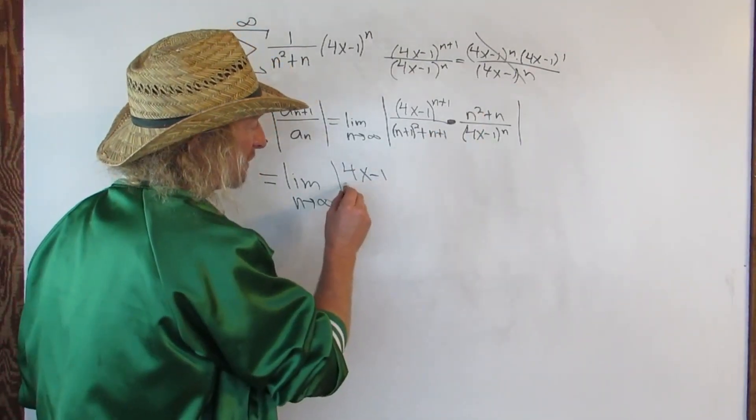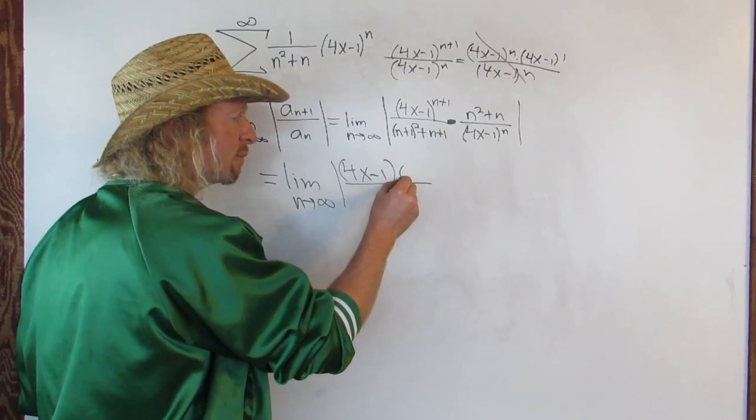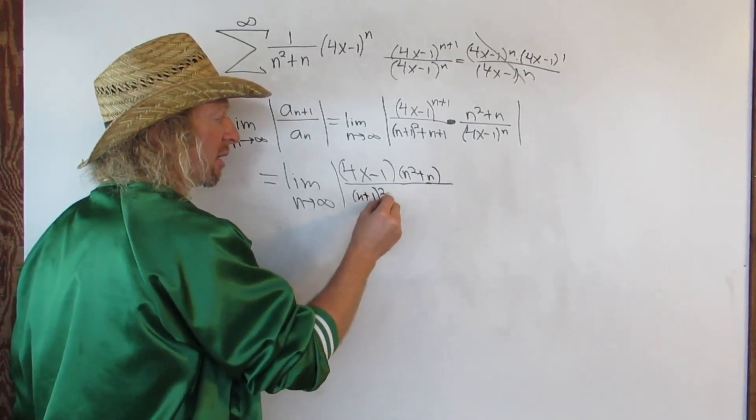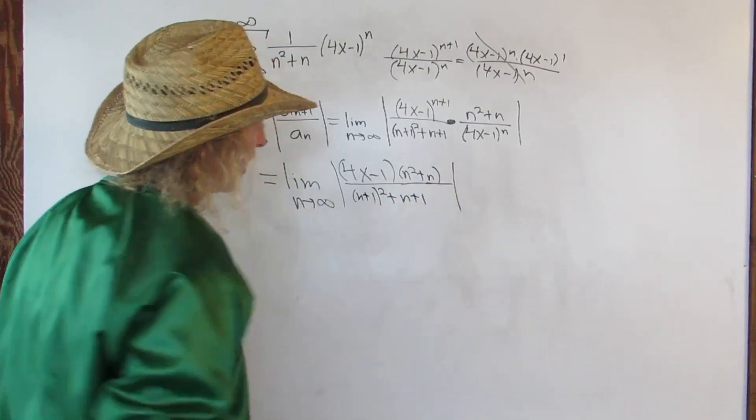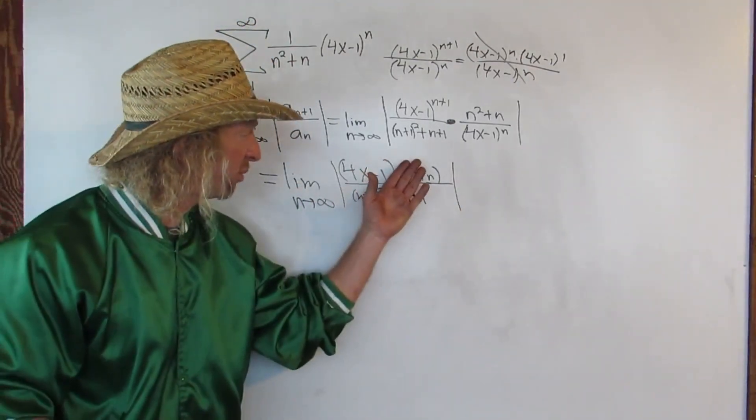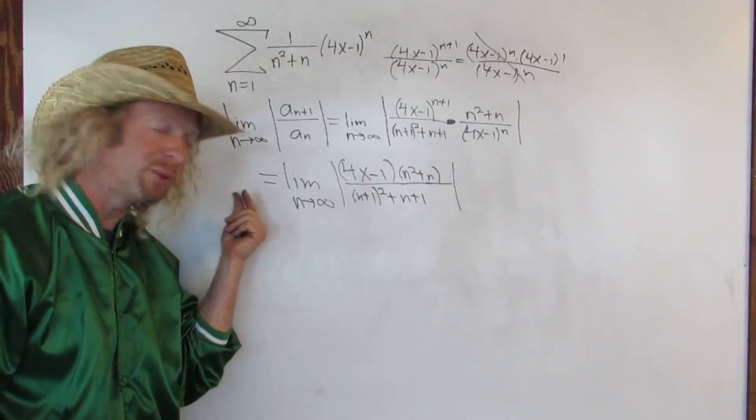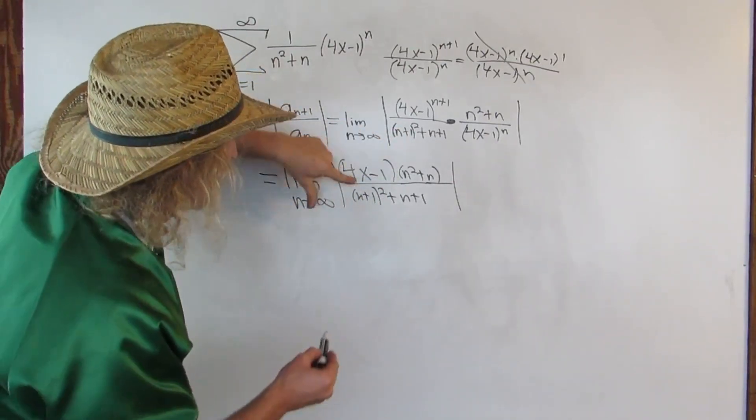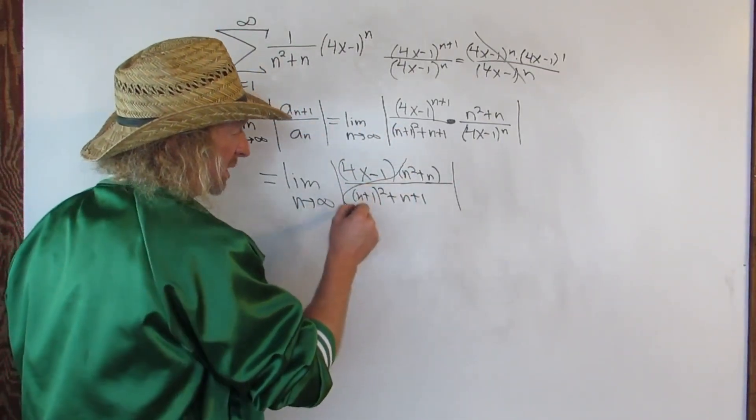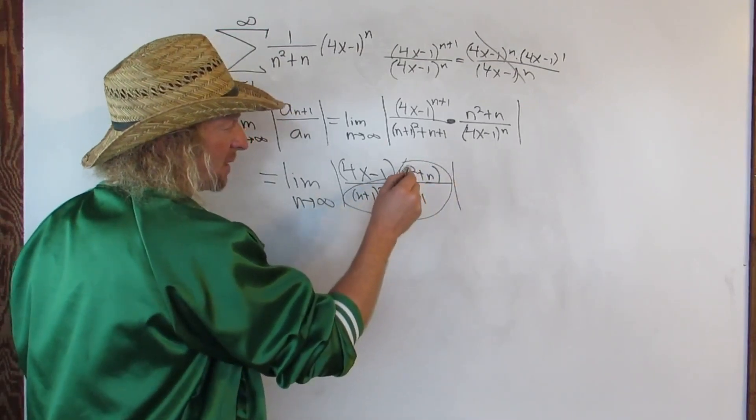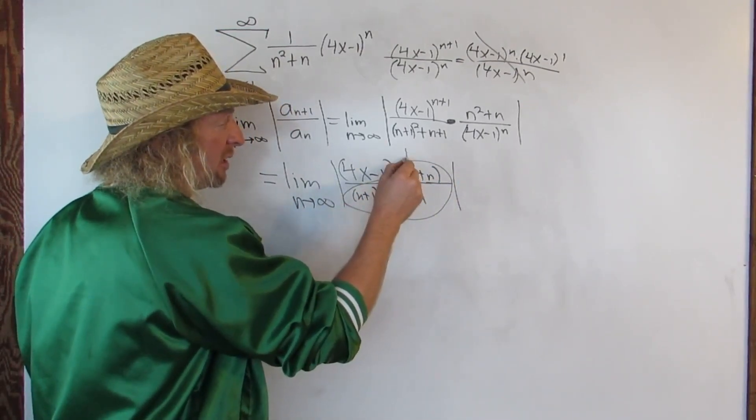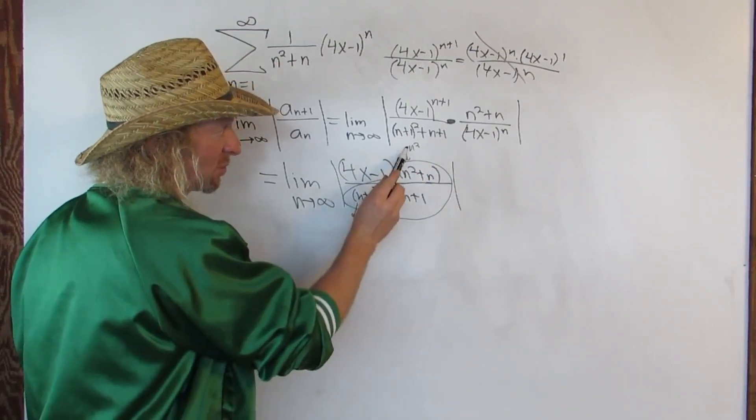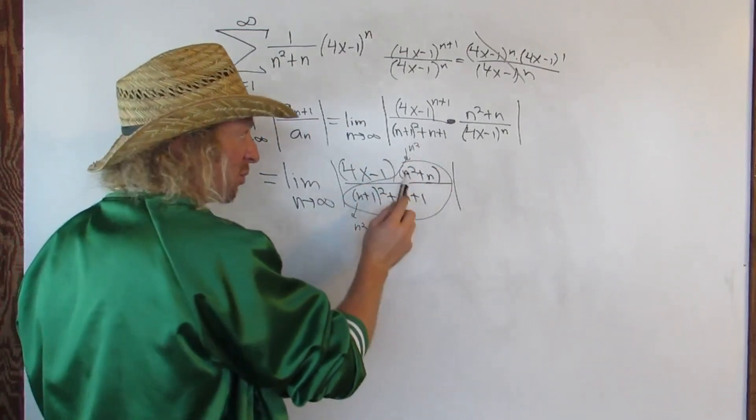And then everything else is okay. We keep everything else. So here we have parentheses, n squared plus n. And then down here we have n plus 1 squared plus n plus 1. You can show an extra step here. You can pull the 4x minus 1 outside of the limit if you wanted to because it's independent of n. It's something else. There's no n here. But this limit here, this limit here is 1. And the reason is, it's the ratio of the leading coefficients. Here the leading coefficient is n squared. And here, if you multiply this out, you also get n squared. So it's like n squared over n squared. So it's like 1 over 1. So this whole limit is 1.